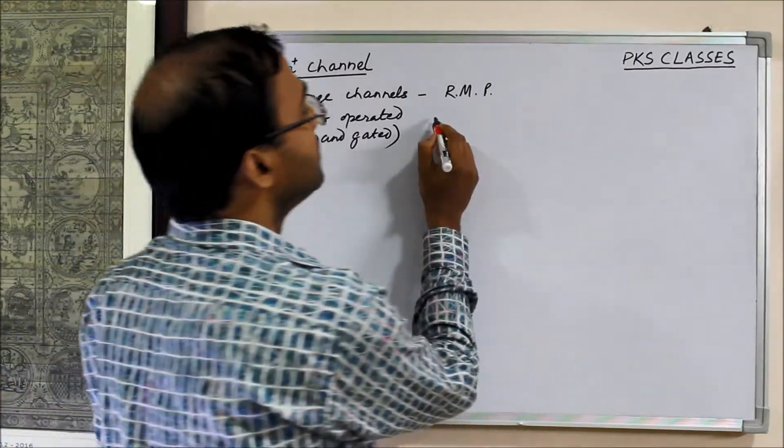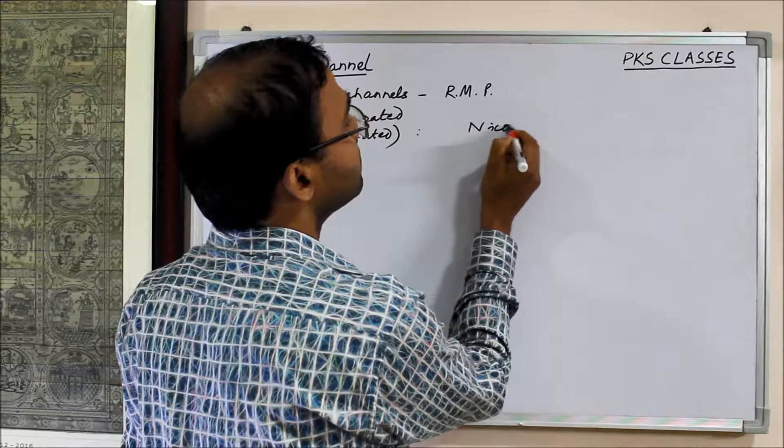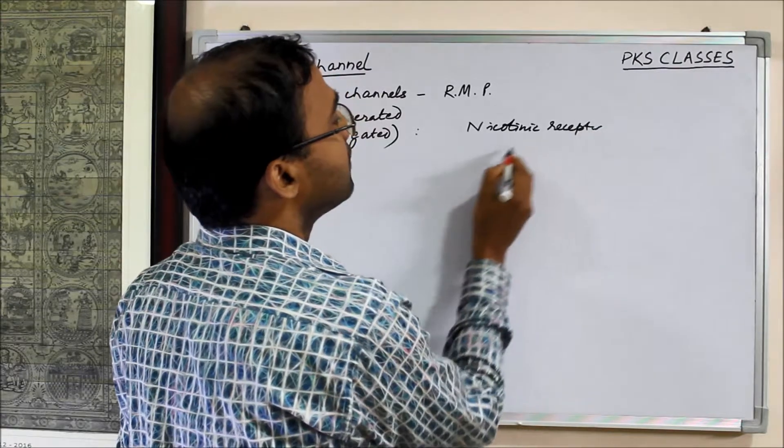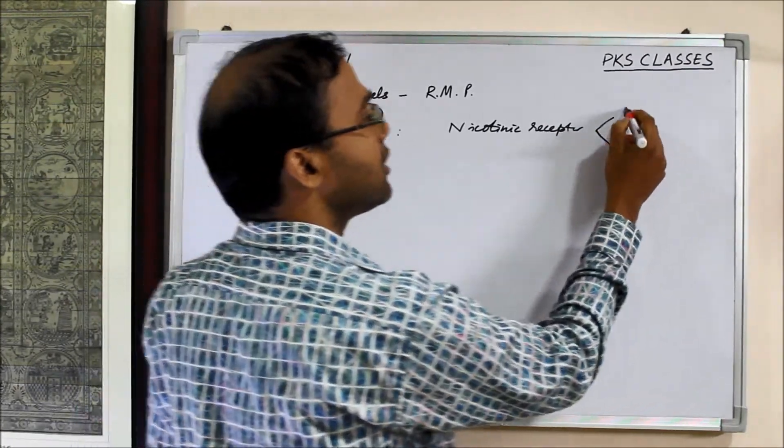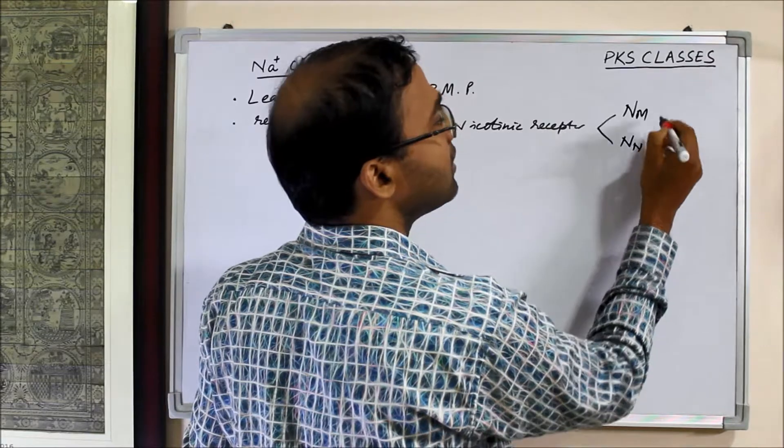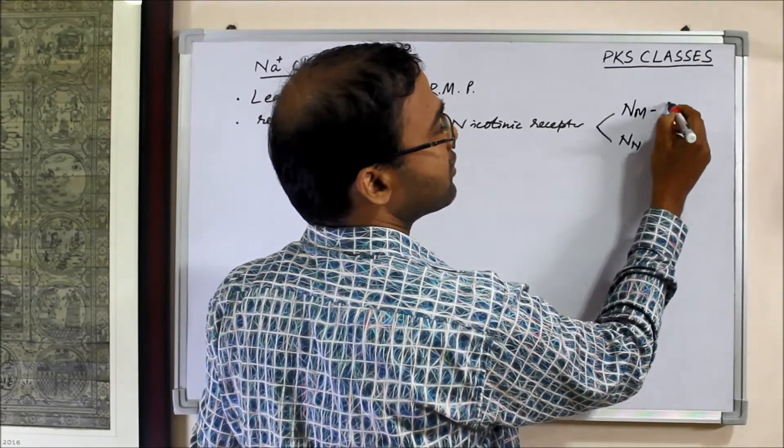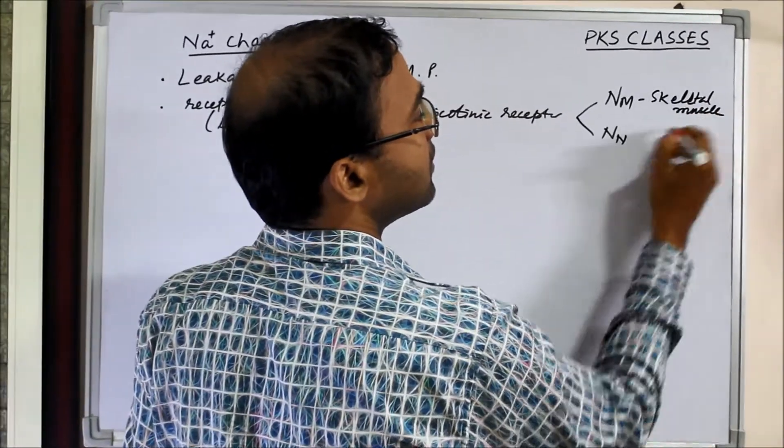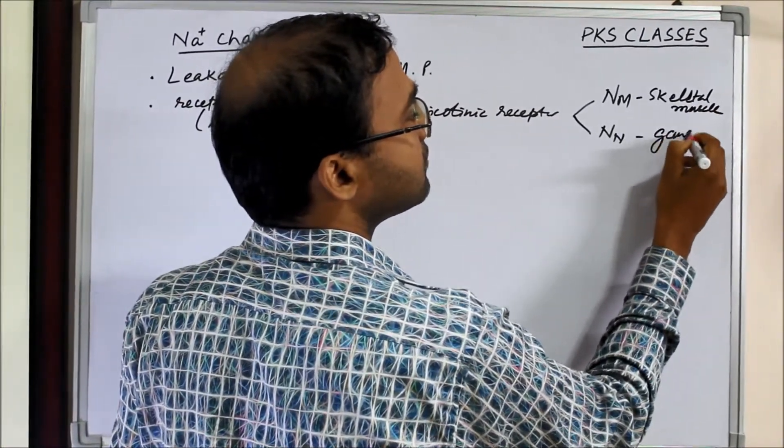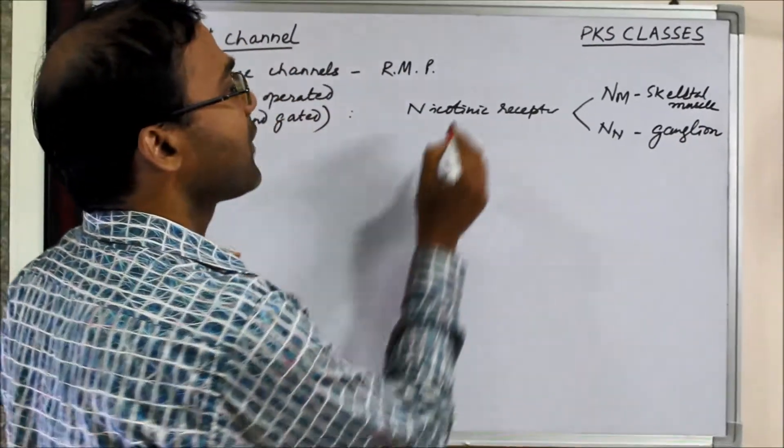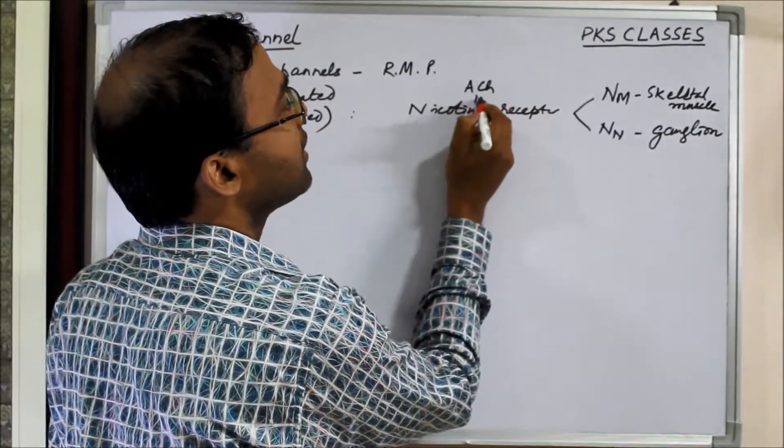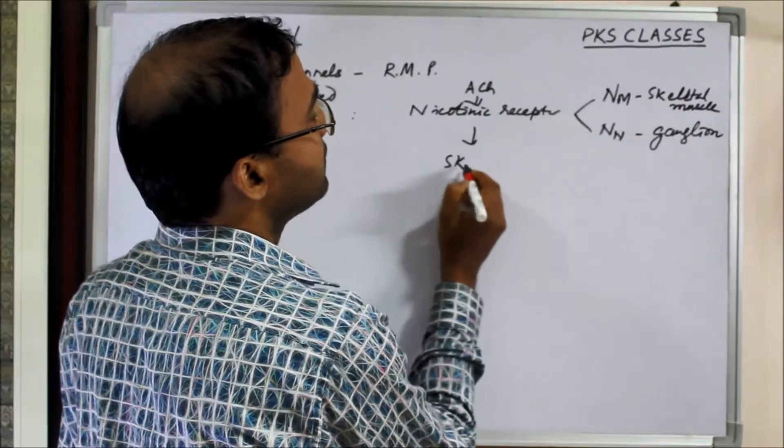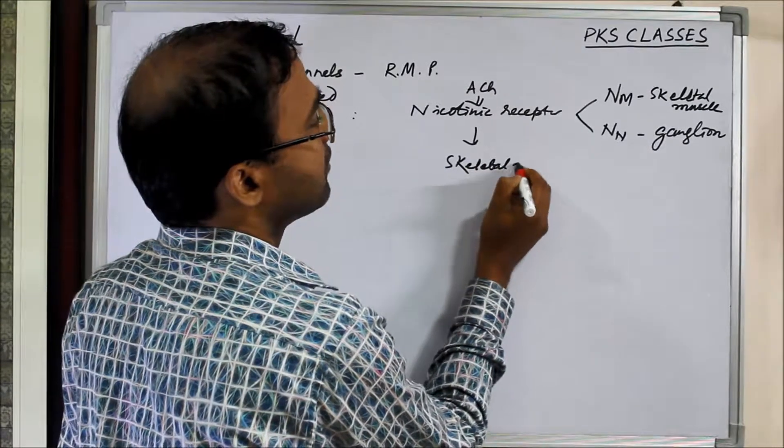For example, nicotinic receptor. We have two types of nicotinic receptor: nicotinic muscular and nicotinic neuronal. The nicotinic muscular is present in skeletal muscle, ganglion.